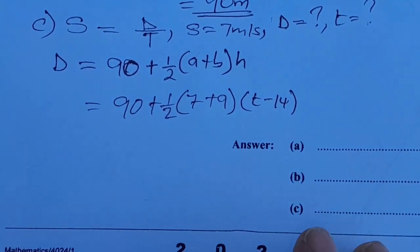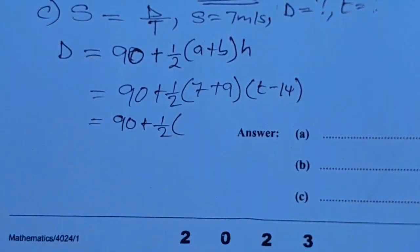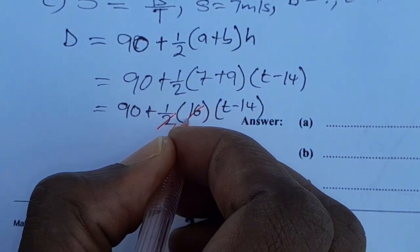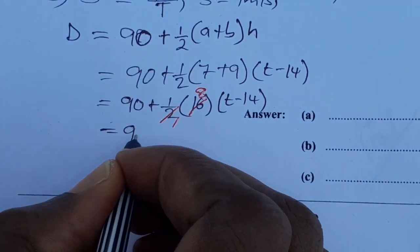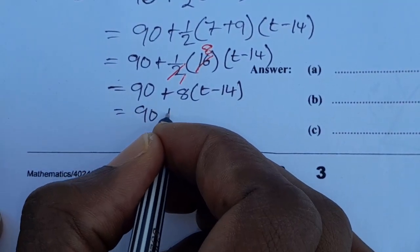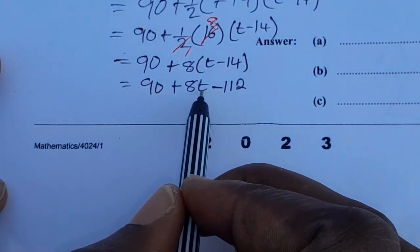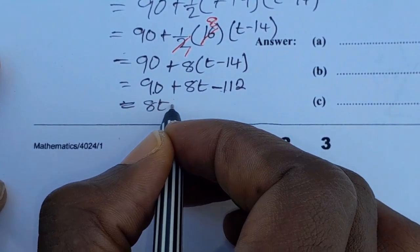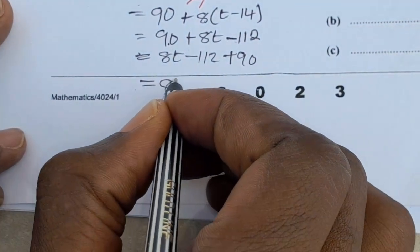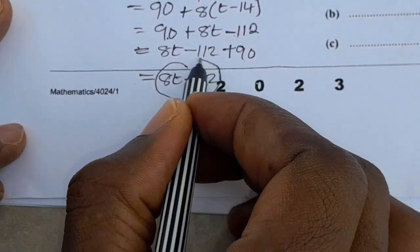So we have: distance = 90 plus half times (7 plus 9) times (T minus 14). That gives 90 plus half times 16 times (T minus 14), which simplifies to 90 plus 8(T minus 14), giving 90 plus 8T minus 112, which equals 8T minus 22.